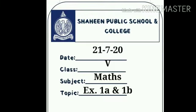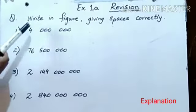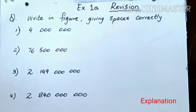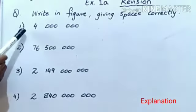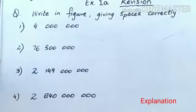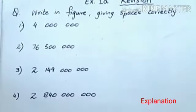Assalamu alaikum children. Today we will revise exercise 1a and 1b. Write in figure giving spaces correctly. We have to write these digits in figure: 1, 2, 3, 4, 5, 6, 7. We have a 7 digit number.